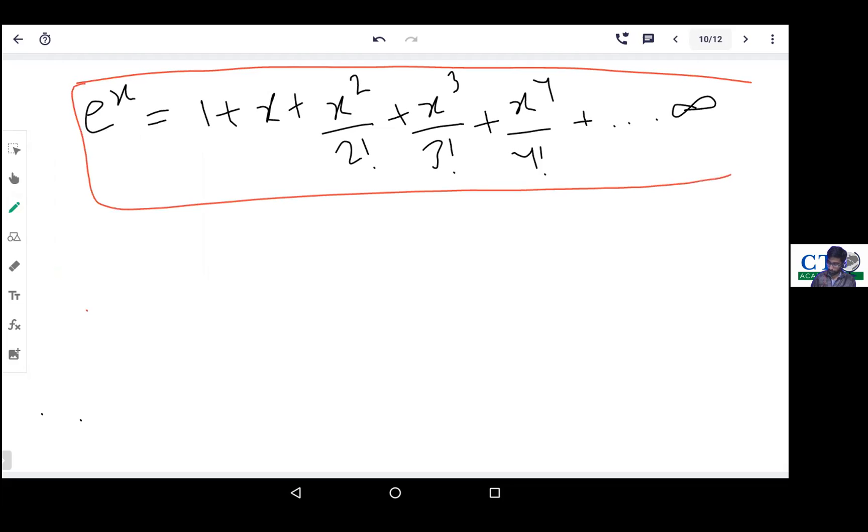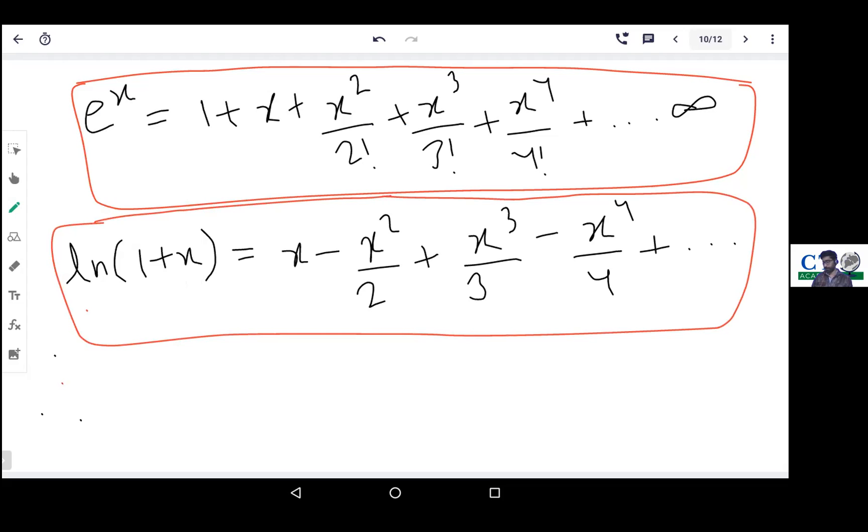Another important one used is logarithmic - ln(1+x). The expansion is x minus x squared upon 2 plus x cube upon 3 minus x to the power 4 upon 4, and so on. Note there's no factorial here. So we will again meet with some other basic concepts. Thank you all.